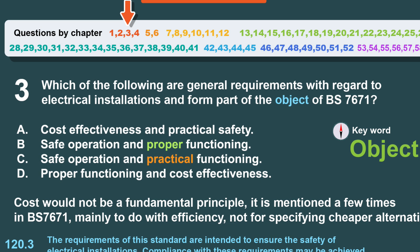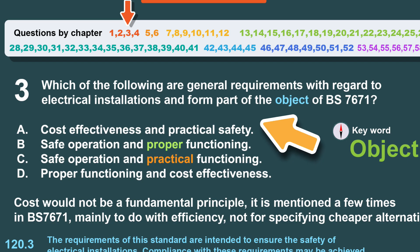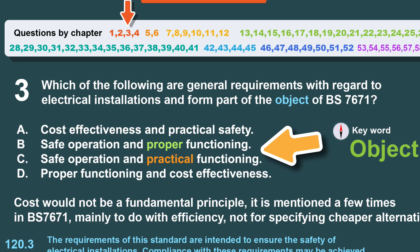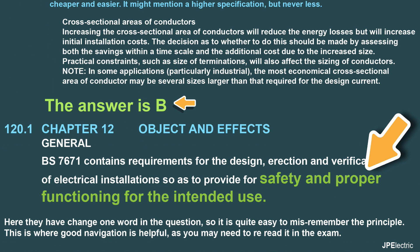Here's another example of how they might phrase a question — sometimes they change just one word. An example being: which of these is a general requirement? Safe operation and proper functioning, or safe operation and practical functioning? You know it, but which one is it? Questions like that — it's good to be able to navigate to the section and just confirm your answer, and this can help you if you get a bit nervous during the exam.